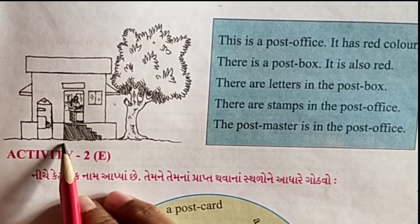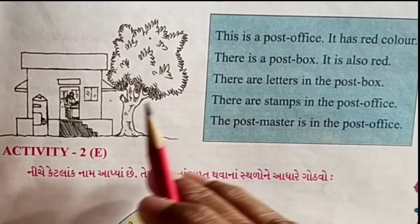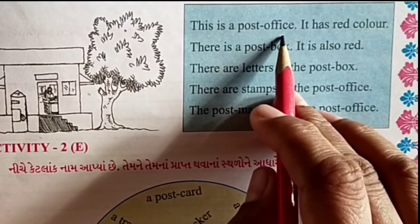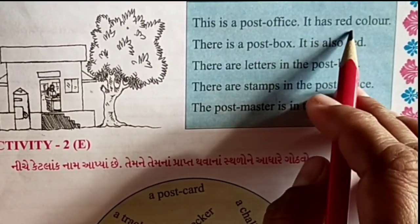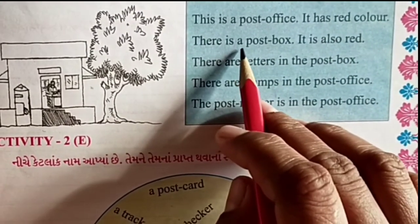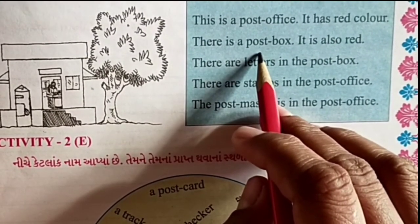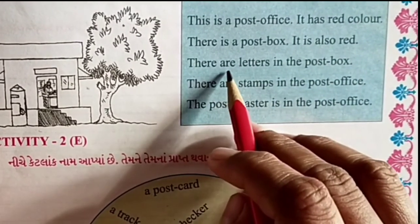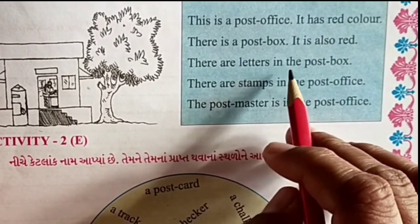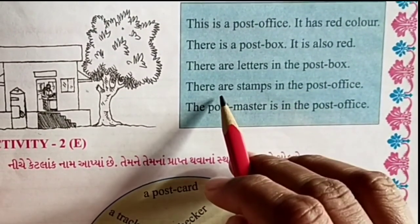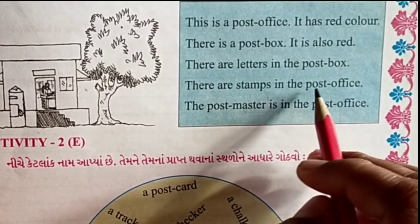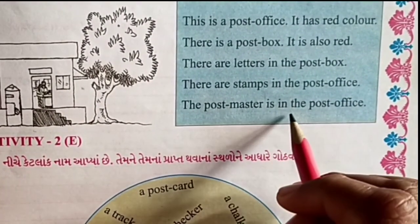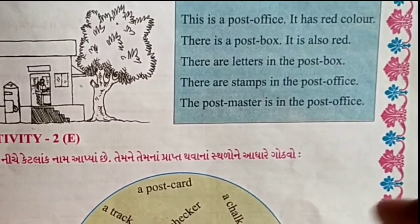Third picture, post office. This is a post office. It has red color. There is a post box. It is also red. There are letters in the post box. There are stamps in the post office. The postmaster is in the post office.